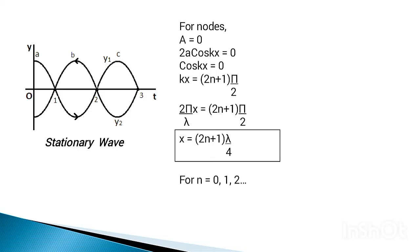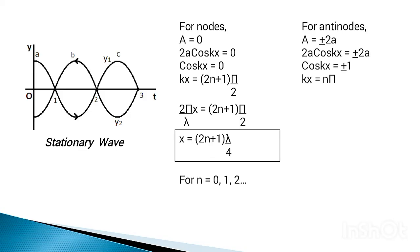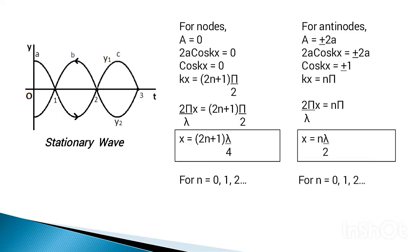Now let's find the positions of antinodes. For antinodes, the amplitude of vibration should be maximum, which is 2 times the amplitude of the individual progressive waves, so A* equals ±2A. Solving gives kx equals nπ. Substituting k equals 2π/λ gives 2π/λ times x equals nπ, and from this x equals nλ/2 for n equals 0, 1, 2, 3, and so on.